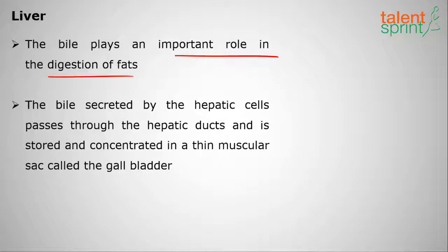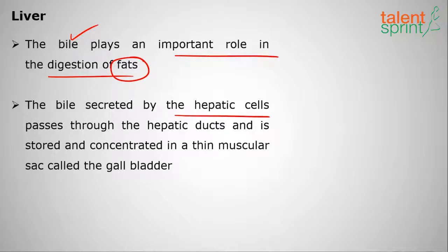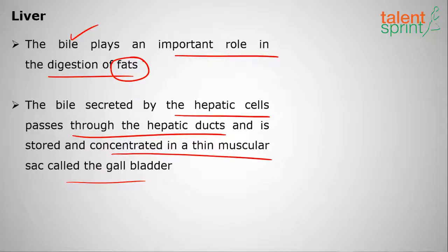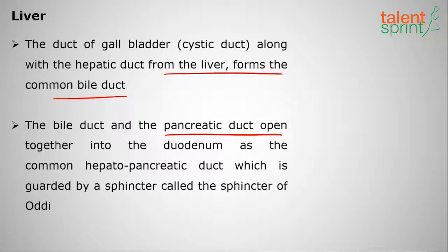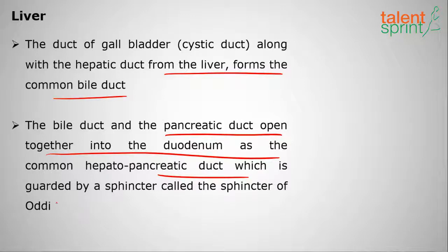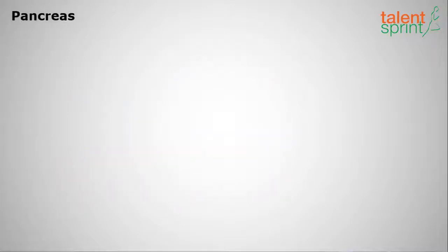To summarize so far: saliva breaks down starch into sugars; digestive juice breaks down proteins into amino acids; and fats are digested by bile juice secreted by the liver. The bile secreted by hepatic cells passes through the hepatic ducts and is stored and concentrated in the gallbladder. The bile duct and the pancreatic duct open together into the duodenum as the common hepatopancreatic duct, guarded by a sphincter called the sphincter of Oddi.